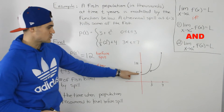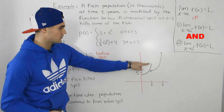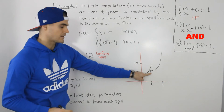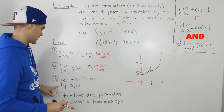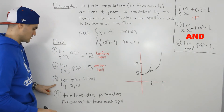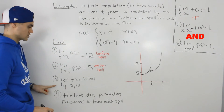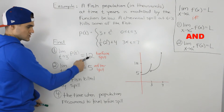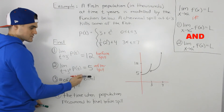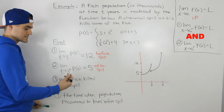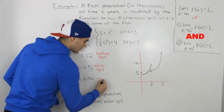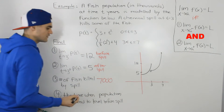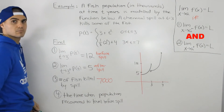For the third question — the number of fish killed by the spill — the population before the spill was 12,000 and right after it dropped to 5,000. So we compute 12 minus 5, and since the values are in thousands, there were 7,000 fish killed by the spill.